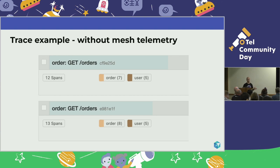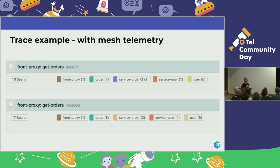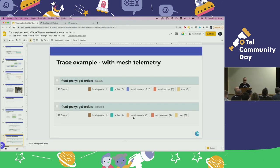Here is a trace where we're routing a request. You can see two traces — one with 12 spans, one with 13 spans — with no telemetry data from the service mesh, just plain OpenTelemetry. When I add the service mesh data, it gets more detailed. Looking at the first request, you can see it communicated with order service number two and the other with number one. This gives observers a clear clue about which version they're looking at.